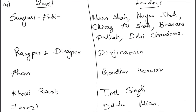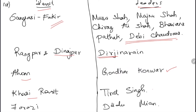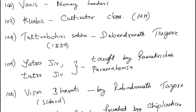Revolt leaders: Sanyasi or Fakir Revolt was led by Musa Shah and Majnu Shah. Rangpur and Dinajpur Rebellion by Dirji Narain. Ahom Revolt by Gandhar Konwar. Kasi Revolt led by Tirath Singh. Farazi Revolt led by Dudu Miyan — this was already asked in the exam. Vanis were money lenders; Kumbis were the cultivator class in Maharashtra.